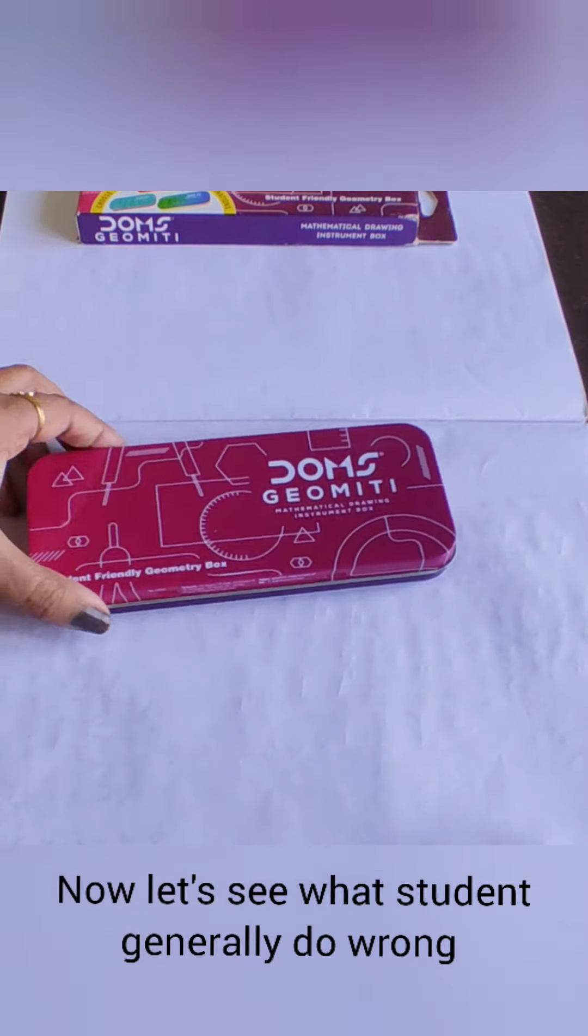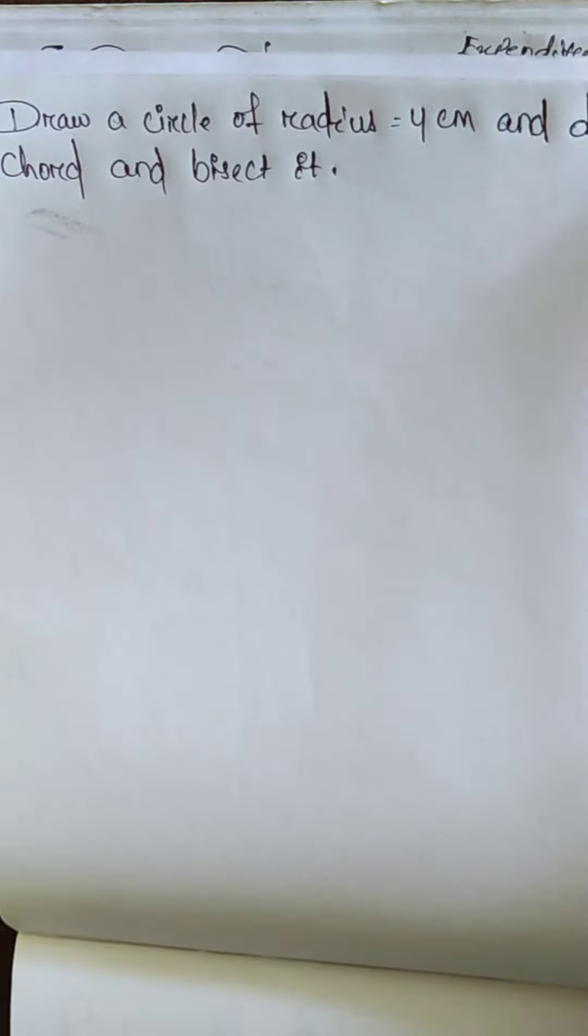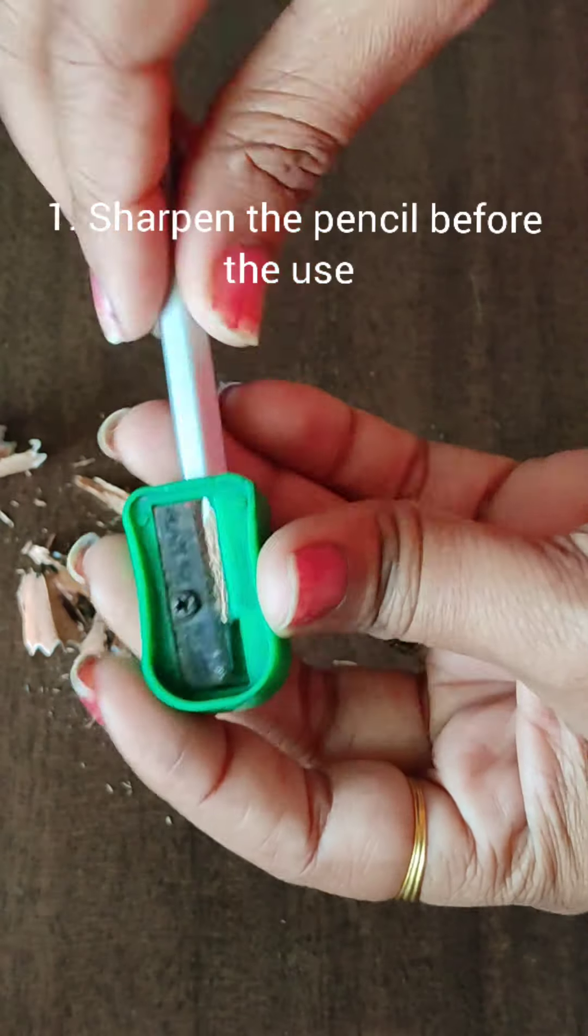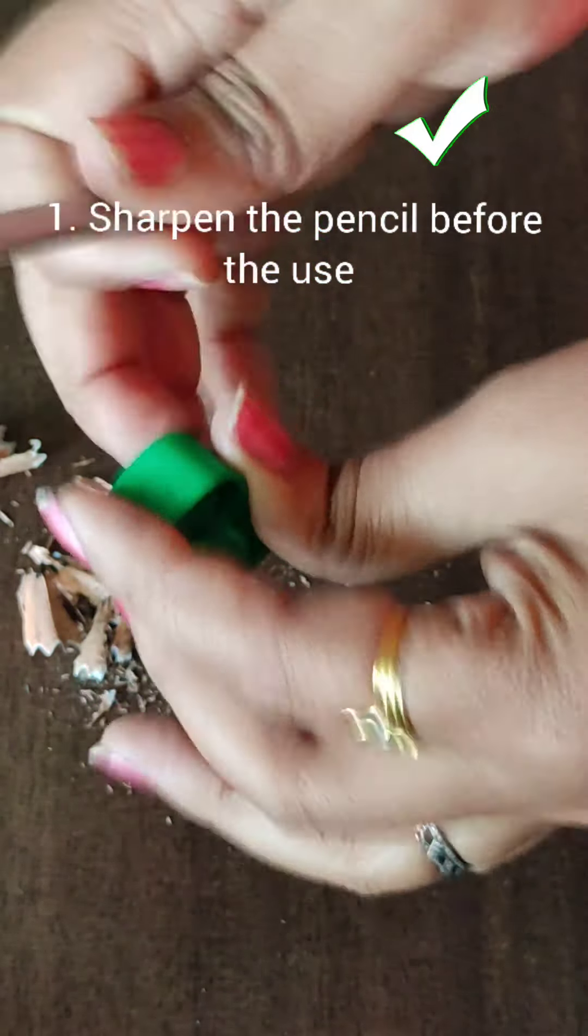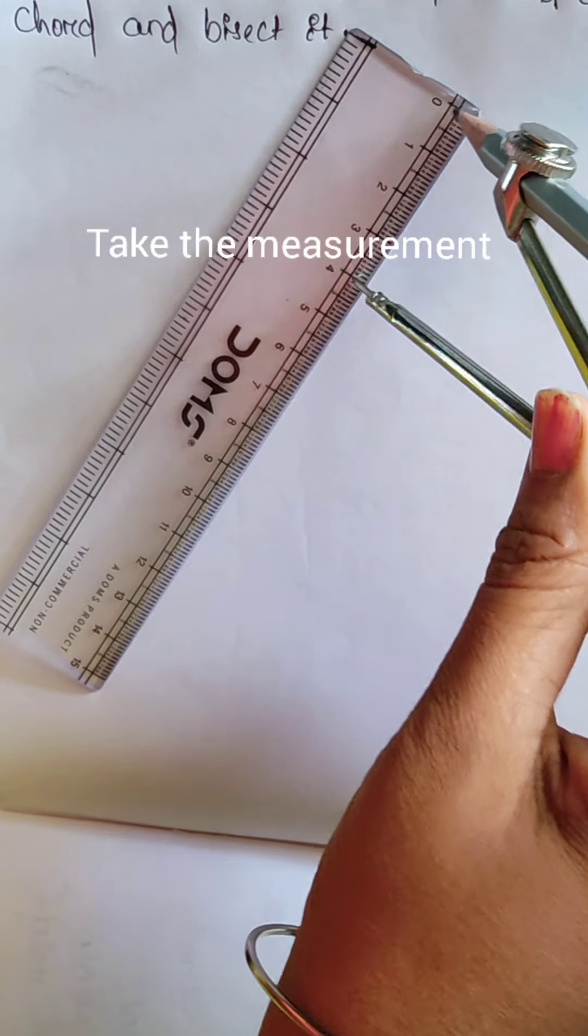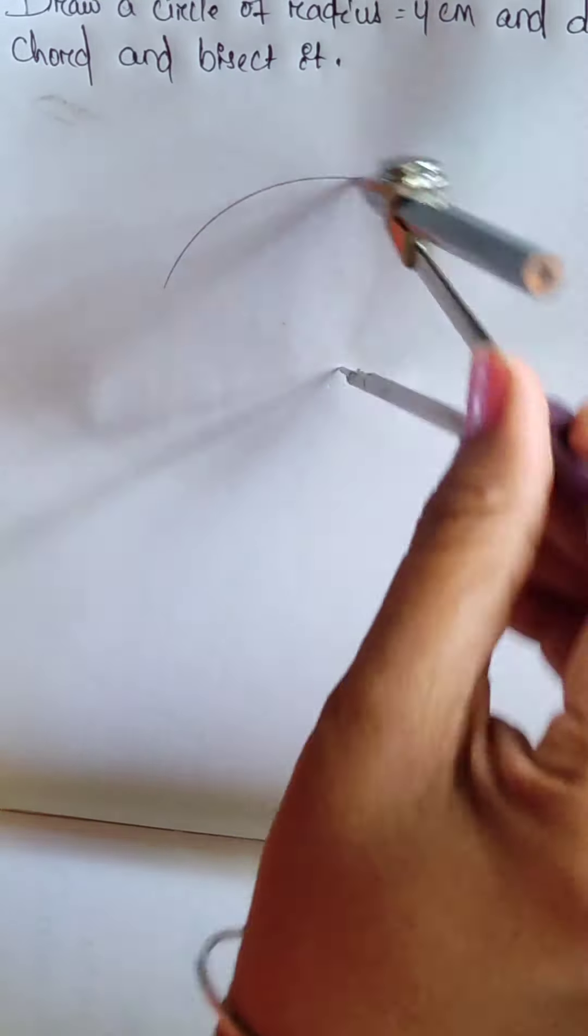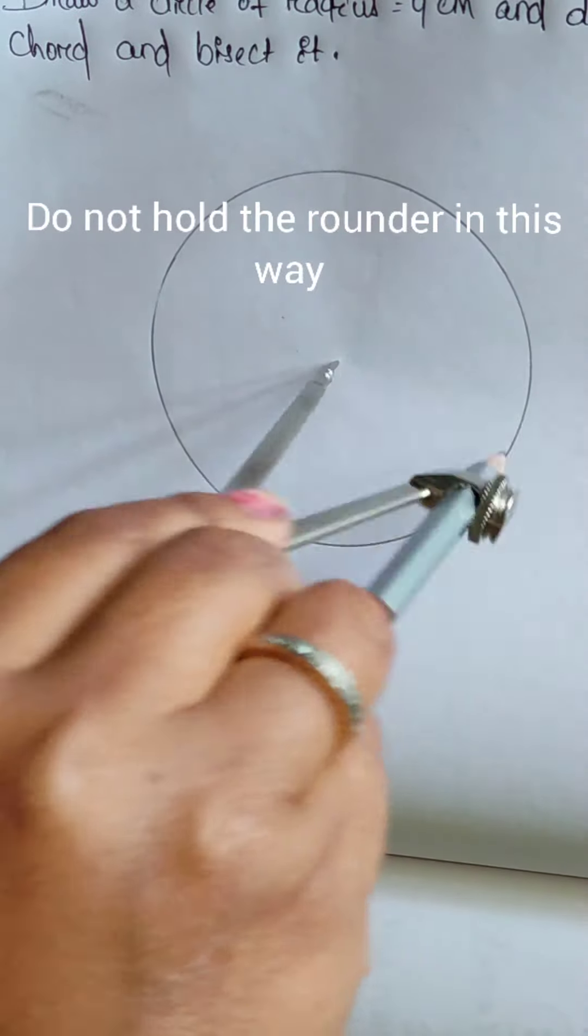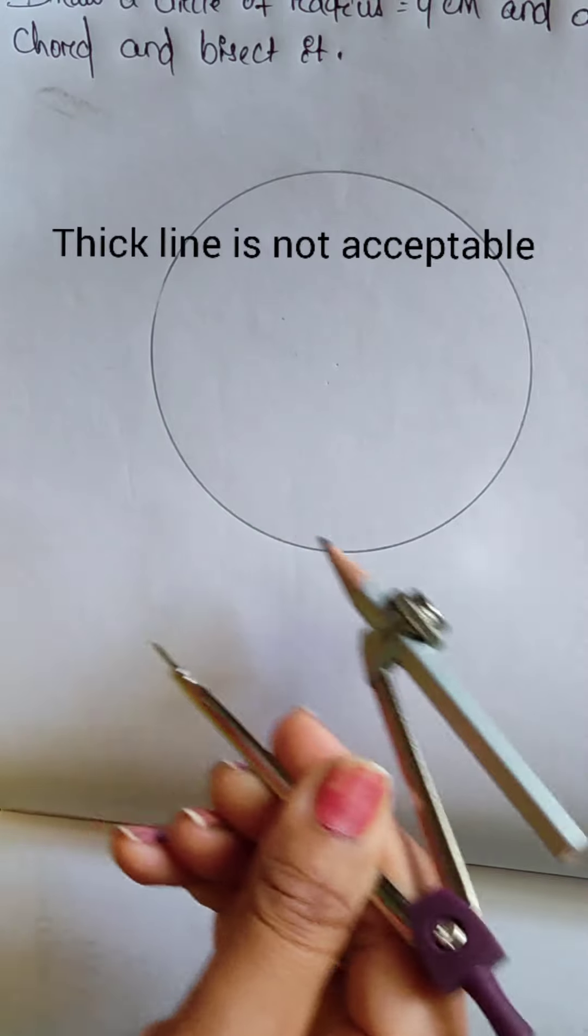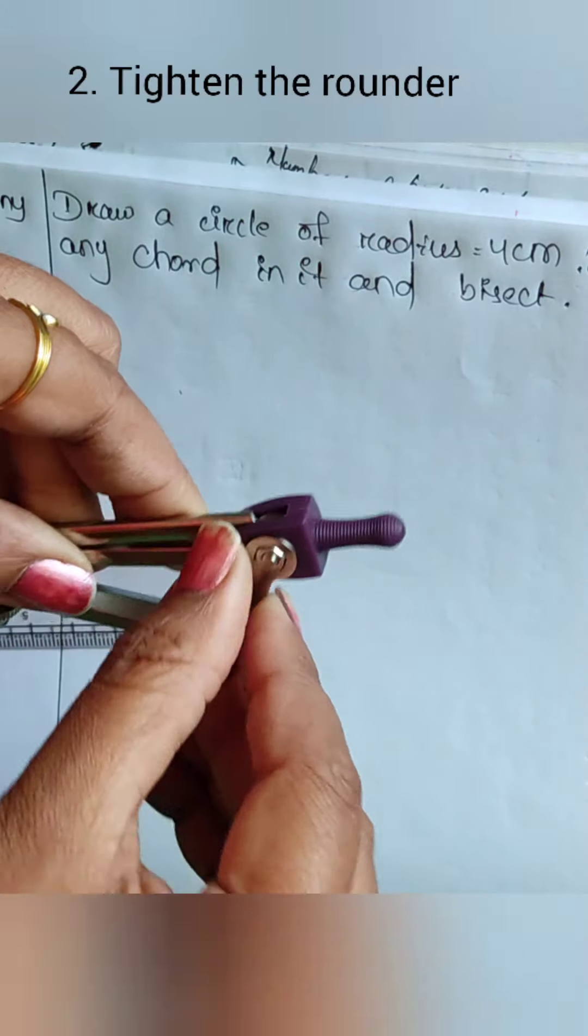Now, let's see what students generally do wrong and what to do. Here one question is: draw a circle of radius 4 cm and draw a chord and bisect it. Firstly, do not use a blunt pencil. Point number one: sharpen the pencil before use. Take the measurement, take one point as the center and then draw the circle. But do not hold the rounder this way. Thick lines are not acceptable in geometry.